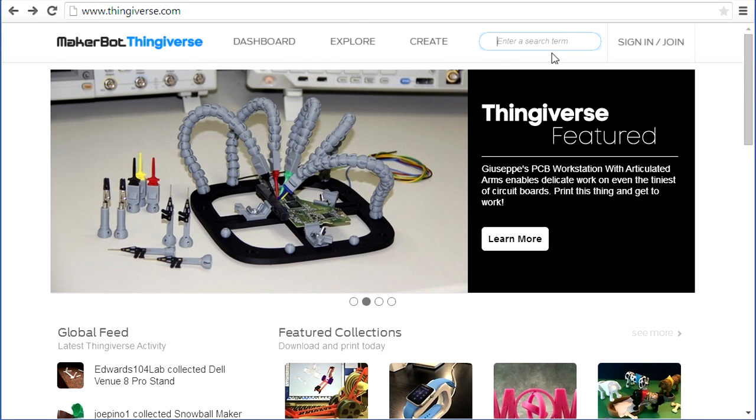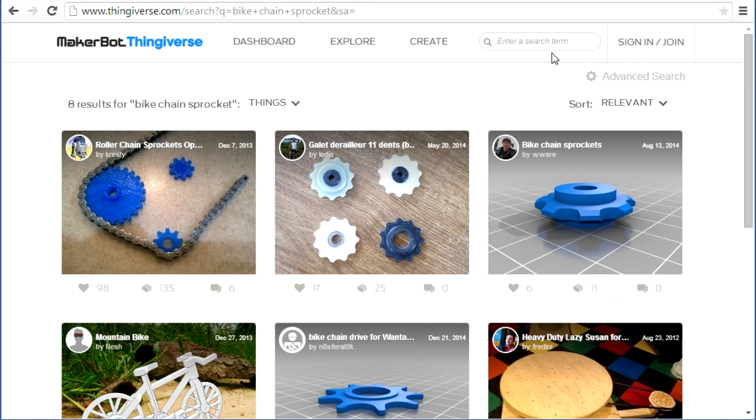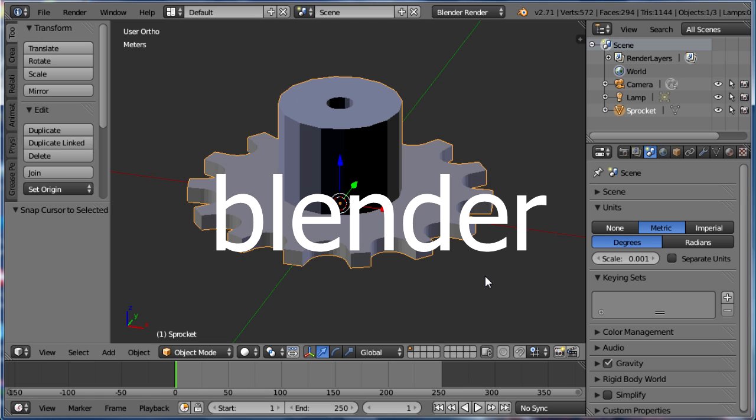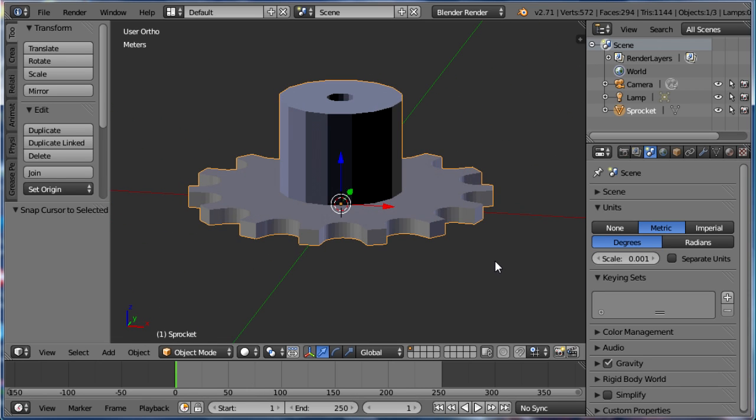I first looked online, on websites like Thingiverse.com, and sure enough there were some there. But I wanted to try my hand at designing my own. So using Blender 2.71, a free 3D modeling and animation software that I use a lot, I drew up the sprocket.